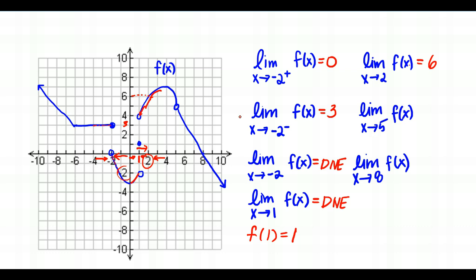The limit as X approaches 5 of f of X: my function is not defined at 5, but from the left side of 5 and the right side of 5 I'm getting closer and closer to a Y value of 5. So this limit equals 5.